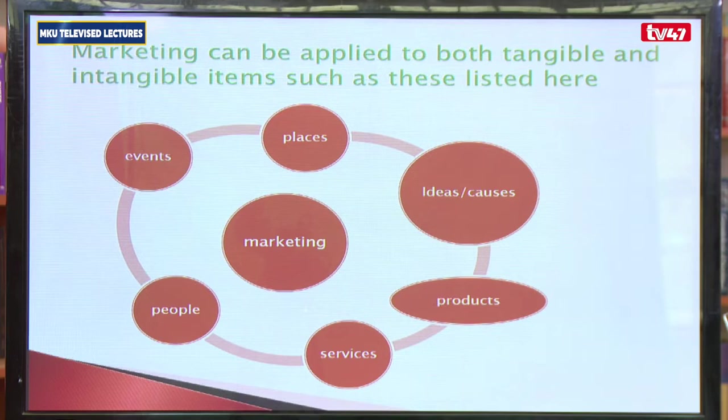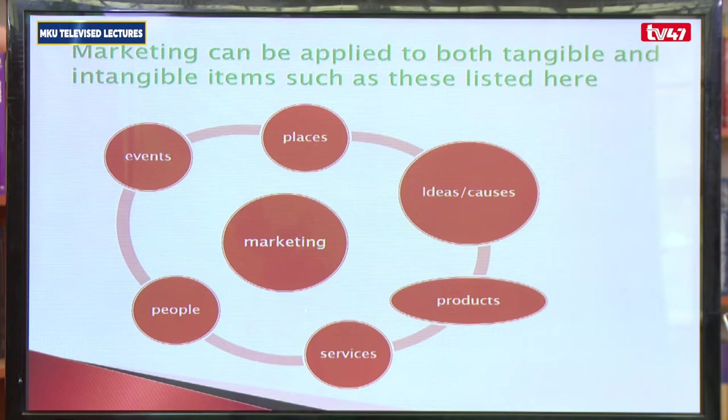Marketing can be applied to both tangible and intangible items. When asked what you market, it can be places — destinations — ideas or causes, products which are tangible goods, services which are intangible, people, events, and so on. These are the different forms a product can take, or the different types of products.